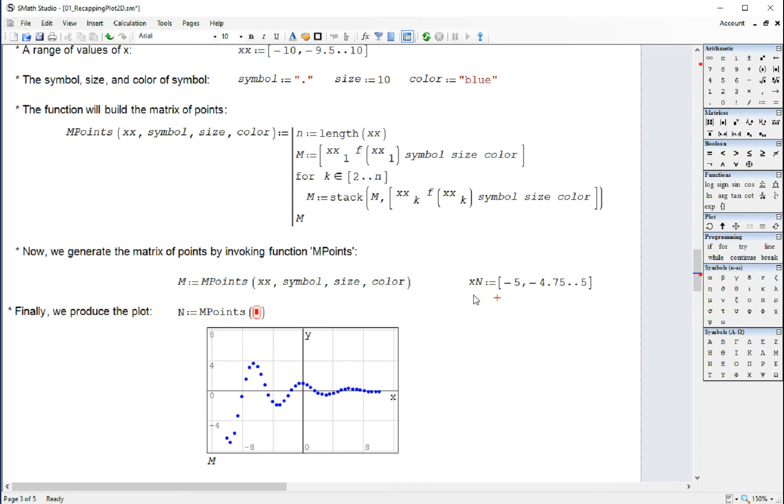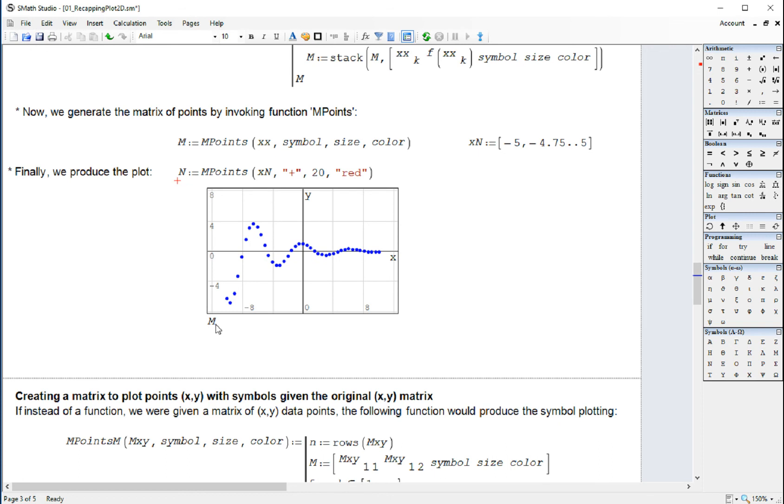And the next number example is 4.75. And so I'm going to enter this X n as my range of values of X. For a symbol, I'm going to enter a plus sign. And the size we're standing before is like a 20. And the color is red. So that created a matrix. The matrix is not showing in the graph still.